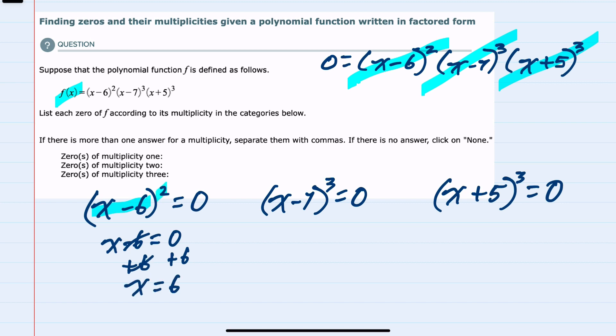But since that square is there, we know that we're actually going to have x equals 6 as a solution twice. So our solution of 6 has a multiplicity of 2.